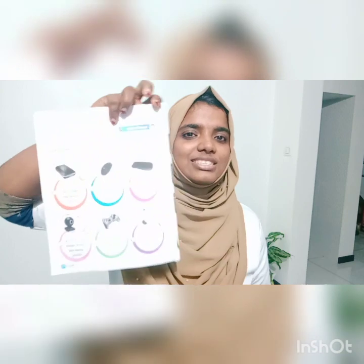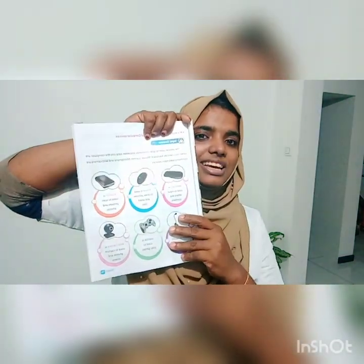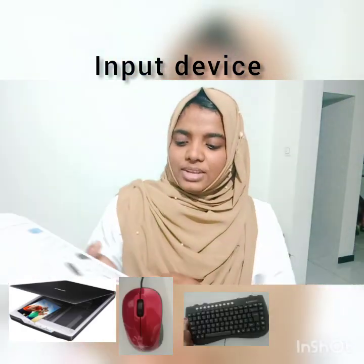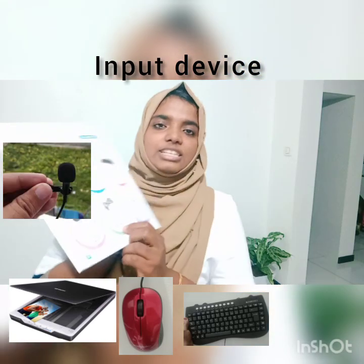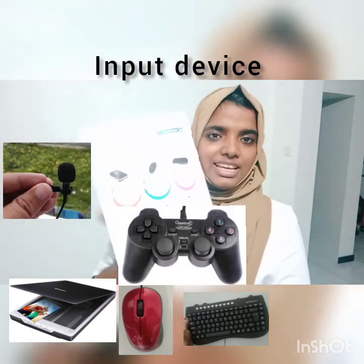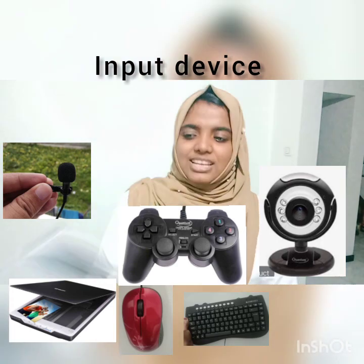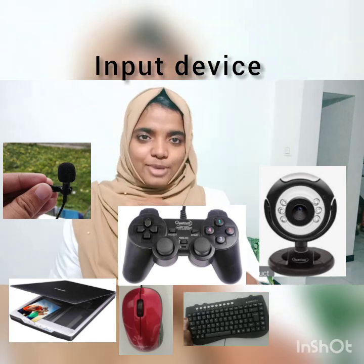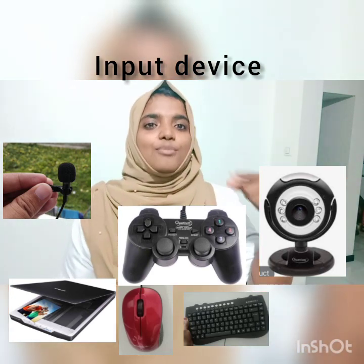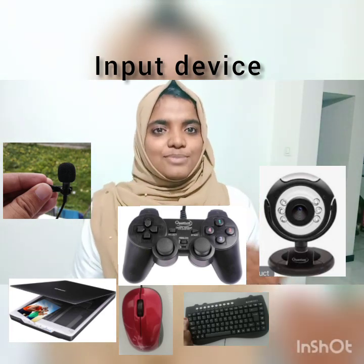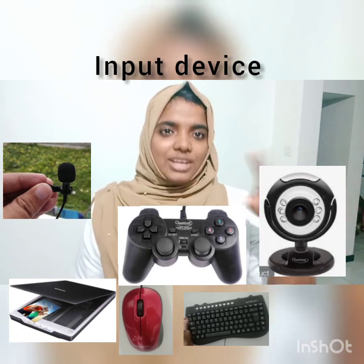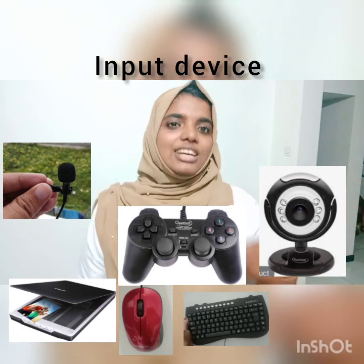Now take your book, page number 21. Can you see? Scanner, mouse, keyboard, microphone, joystick, and webcam are all listed there. All these are input devices. When you move the mouse, the arrow is seen on the monitor screen, so the mouse is an input device. The keyboard is also an input device.